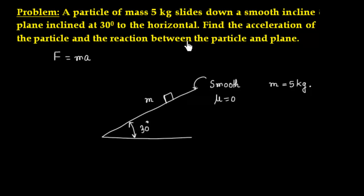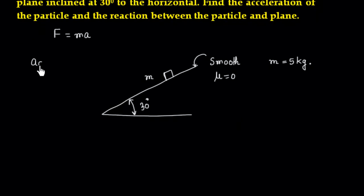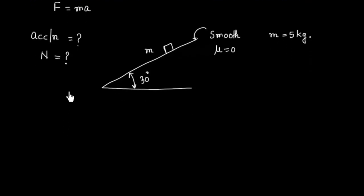We have to find the acceleration of the particle and the reaction between the particle and the plane. We call the reaction N (normal reaction). To solve this problem, we first draw the free body diagram. There is a force mg acting downward, and a normal reaction force acting perpendicular to the surface.